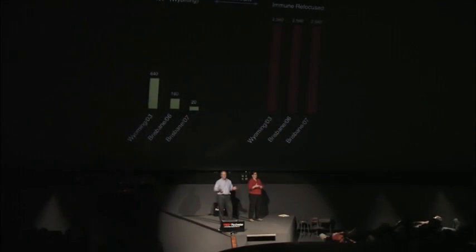We seem to have grown accustomed to losing 30 to 35,000 people a year in this country to flu, and that's when the vaccine works pretty well. In some years, like in 2007, the vaccine didn't work very well at all because the Brisbane virus came up and surprised us, and more than twice as many people died.